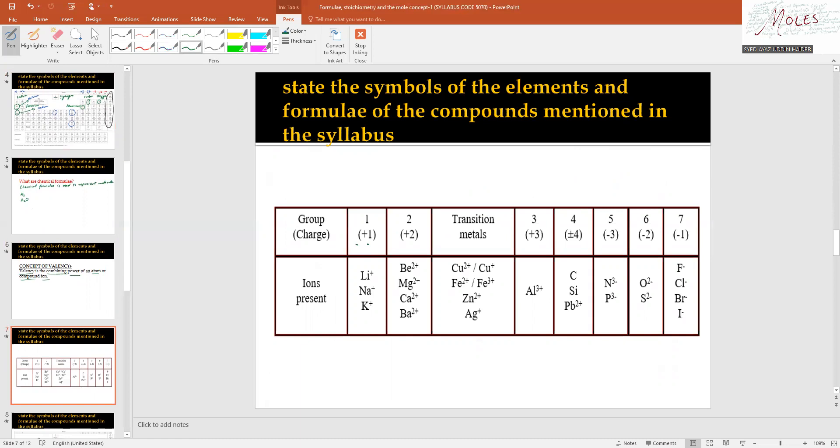To review these charges: group one is plus one, group two plus two, group three plus three, group four plus or minus four, and groups five, six, seven are non-metals.